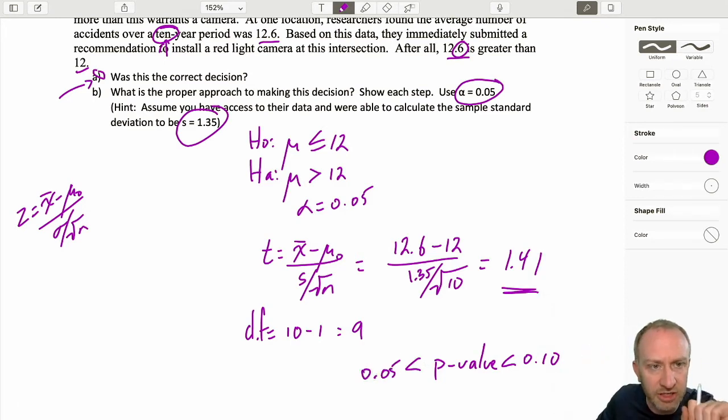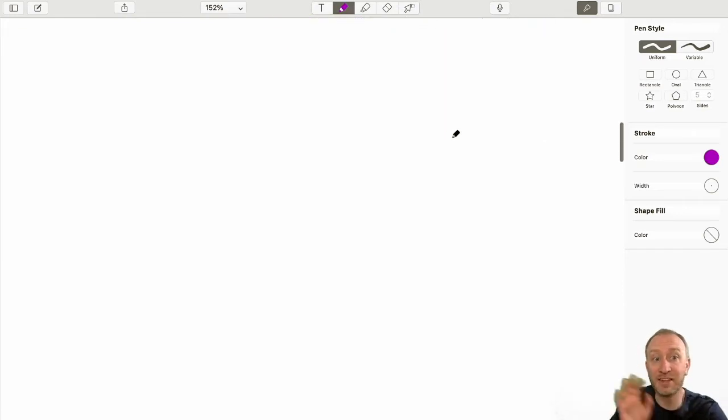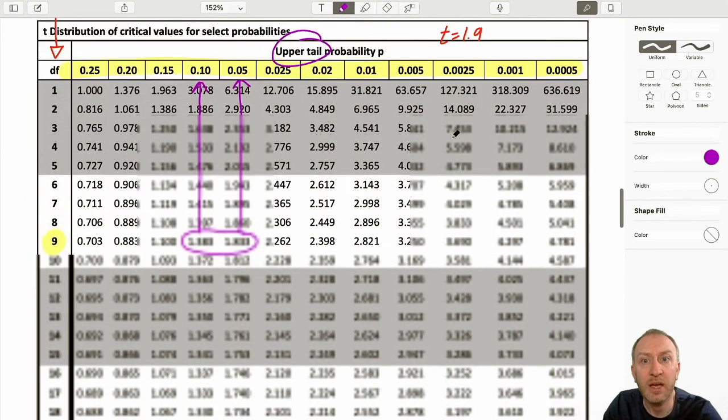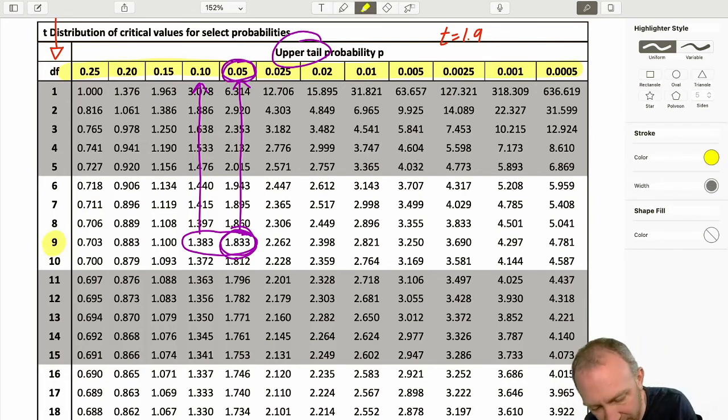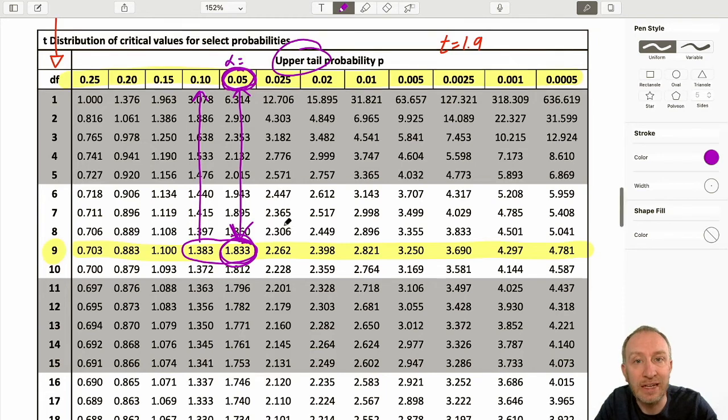Now before we draw a conclusion, I know you want to draw a conclusion right away, let's look at the critical value. So alpha is 0.05. I come down here, and again I'm still ignoring everything in that table except what I have highlighted in yellow. So now I'm looking, here's my probability 0.05. There's my critical value 1.83. My yellow disappeared. So my critical value here again, because this is alpha is 0.05, the t-value that corresponds with that is 1.883.